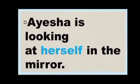The second way is reflexive pronoun may be used as the object of a preposition when the subject and object are the same. For example, Aisha is looking at herself in the mirror. Here, subject is Aisha and object is herself. The preposition is at.